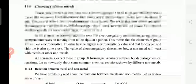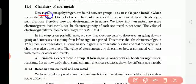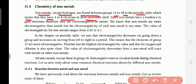Chemistry of non-metals. Non-metals except hydrogen are found between group 14 to 18 in the periodic table, which means that they have 4 to 8 electrons in their outermost shell. Since non-metals have a tendency to gain electrons, therefore they are electronegative in nature.